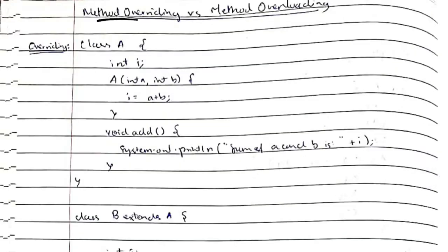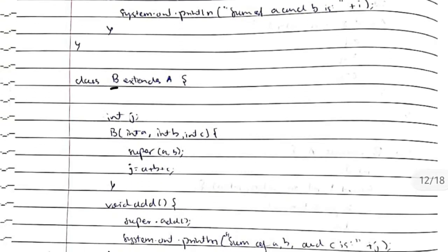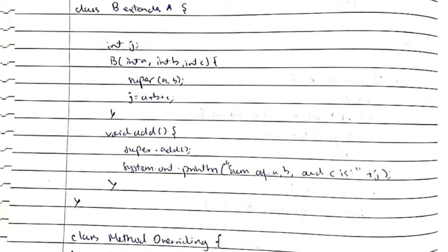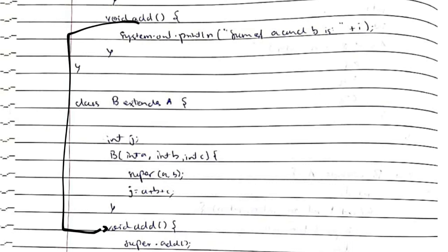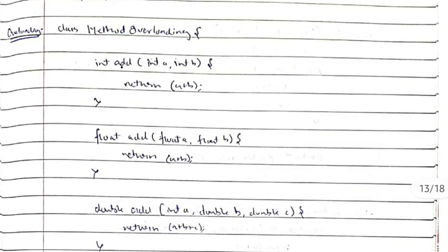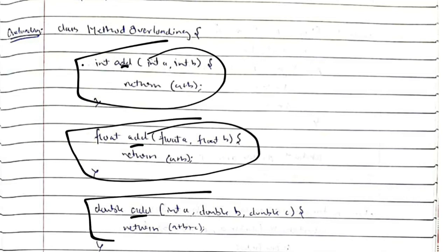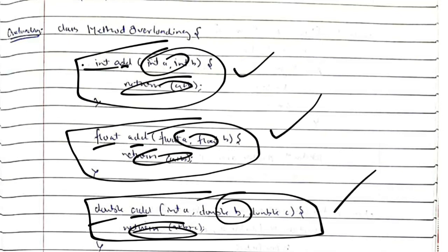Method overriding involves inheritance: class A has a function 'void add' that adds a and b. When class B inherits A and wants to add a third variable c, giving the sum of a + b + c, it overrides the function with the same name but a new definition. Method overloading means same function name with different return types and different parameters — for example, three functions all named 'add' but with different parameters. Based on what parameters are passed from the main function, the appropriate version executes.